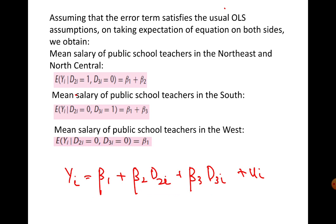Notice that we have three categories: North East and North Central, South, and West. But if we have three categories, we include only two dummy variables. If we were to include a third dummy D4 equal to 1 when the school belongs to the western region, then D2, D3, and D4 would be linearly related — they would suffer from perfect multicollinearity. I will explain this in more detail shortly.